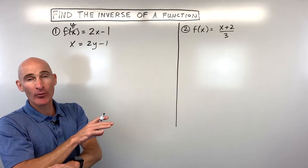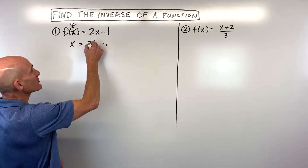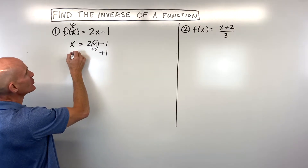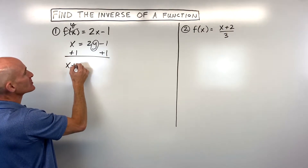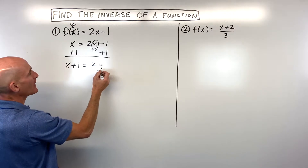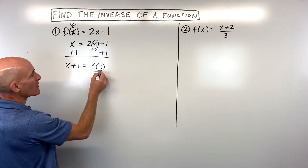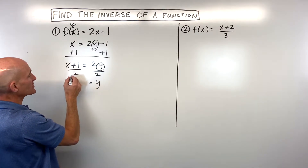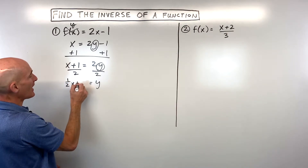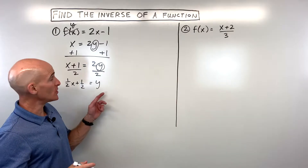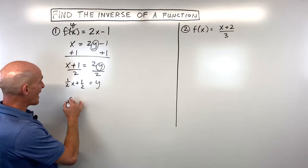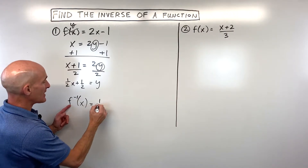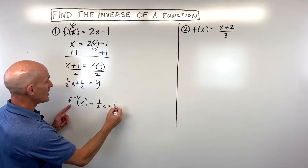It's like the input becomes the output and the output becomes the input. Now we solve for this new y, working from the outside in. Add 1 to both sides: x plus 1 equals 2y. Then divide both sides by 2, giving us x over 2, which is ½x plus ½. Using inverse notation, f⁻¹ of x equals ½x plus ½.